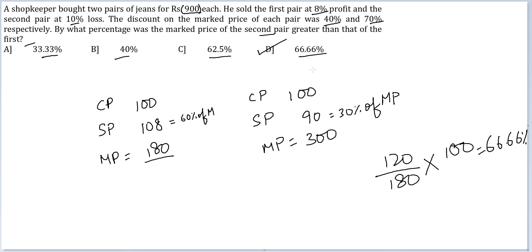900 here was irrelevant or distraction. You could avoid it and still get your answer.